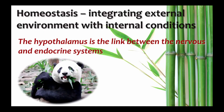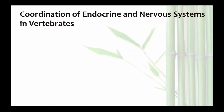In the chemical communication video, we talked about how hormones work, and also a bit about how hormones can maintain homeostasis. This video is going to expand on that concept by considering how hormones are involved in integrating external environmental conditions with homeostasis. Remember that animals use two systems to coordinate the external and internal state: the nervous system and the endocrine system.